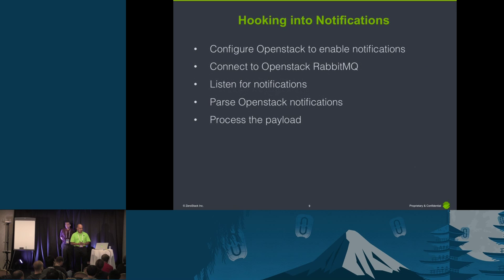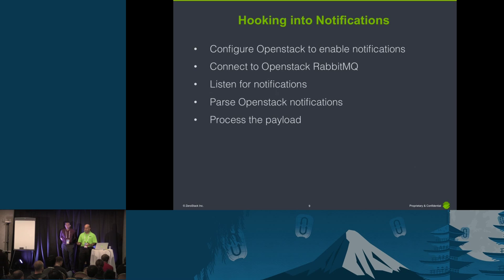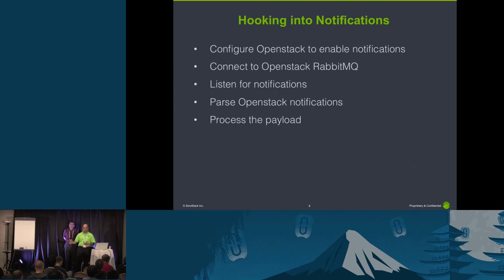I want to dive a little deeper into the library we've open sourced. I'll walk through some code examples and show you how to build a system yourself using either our library or on your own in any different language. To hook into notifications, one thing to remember first is that notifications are a subset of what the messaging system is used for in OpenStack. The basic workload functionality — RPCs and everything — also runs through the messaging system. So you have to be careful that you're looking at notifications rather than the rest of the messaging system. I'll talk about a gotcha a little bit later.